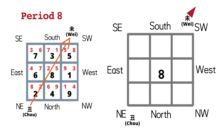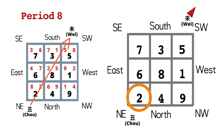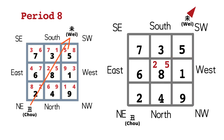As we've learned about the flying patterns, since number 2 star is in the sitting direction, we then write number 2 on the left-hand side of the middle sector. Number 5 star is in the facing direction. Therefore, we write number 5 on the right-hand side of the middle sector. Let's first look at the sitting star.